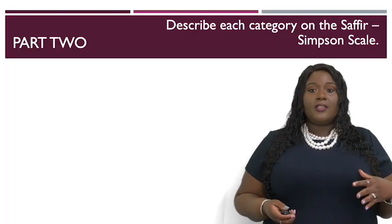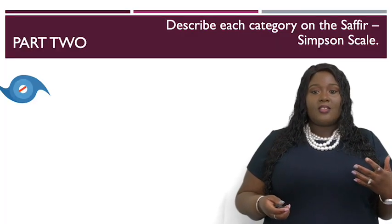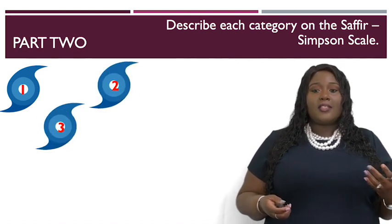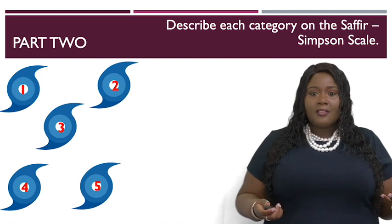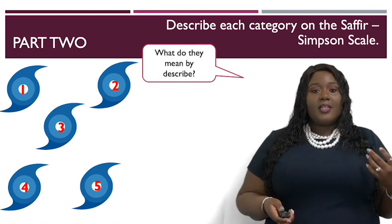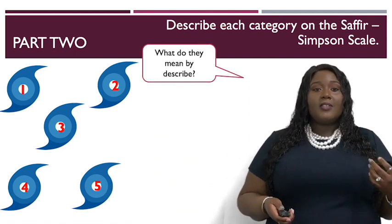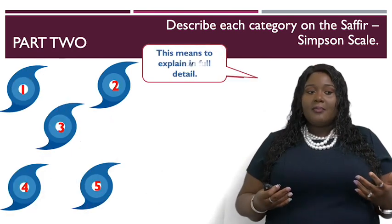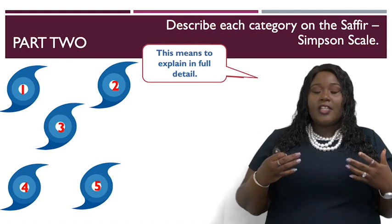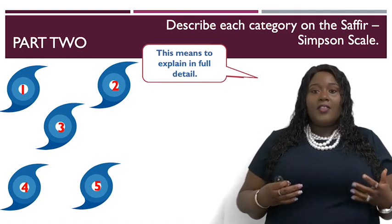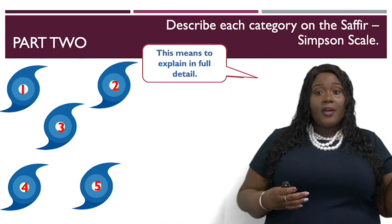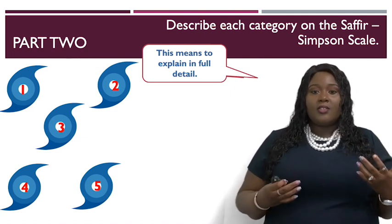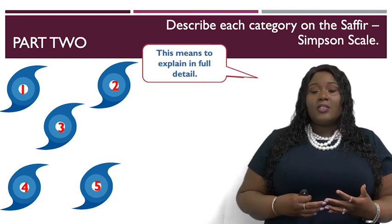Part two of question one requires you to briefly describe each category stated on the Saffir-Simpson scale. 'Describe' means to explain in full detail. So you need to tell me the details of each category — category one, category two, and so on — providing all the relevant information related to each one.